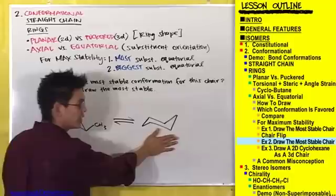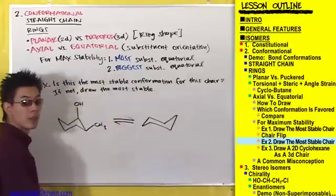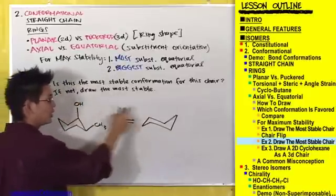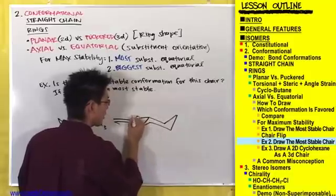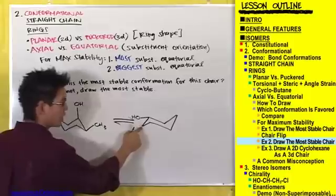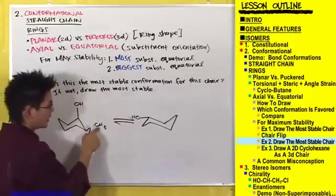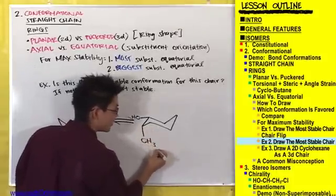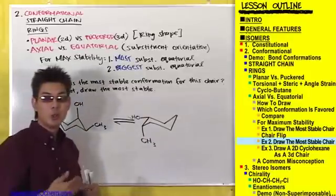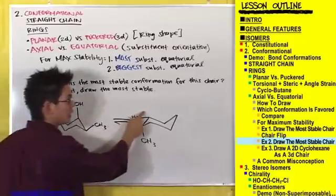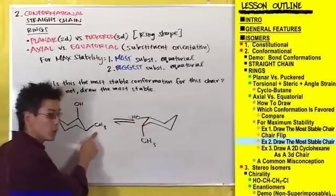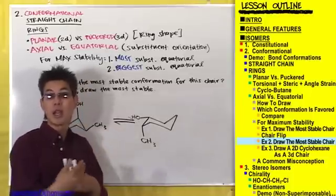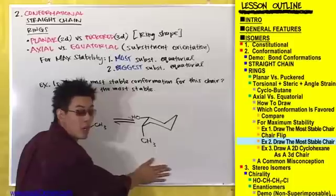It doesn't matter how you put the substituents on this carbon ring as long as they're on the appropriate carbons. I'm going to stick this OH onto this carbon and it's going to change from axial to equatorial. This CH3 I'm going to put on this carbon, one carbon away from this OH — it was equatorial, so it's now going to change to axial. We've now made this OH change from axial to equatorial, and flipped this CH3 from equatorial to axial. The biggest substituent in terms of atomic radius, the OH, is now equatorial, and this is now in the most stable conformation.